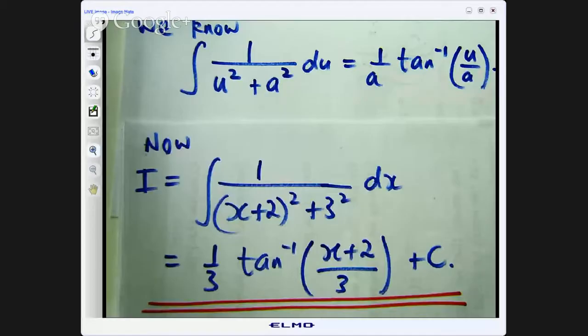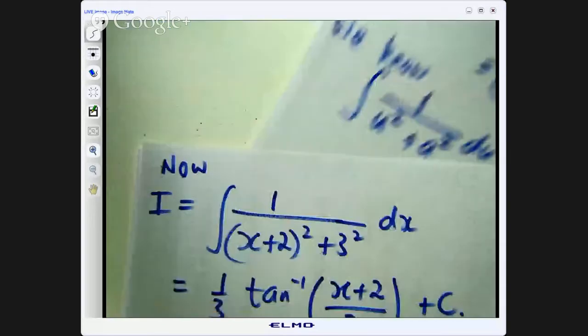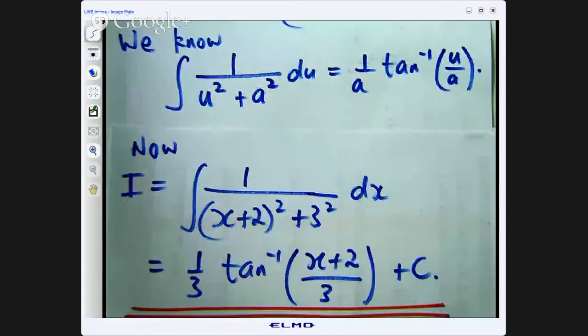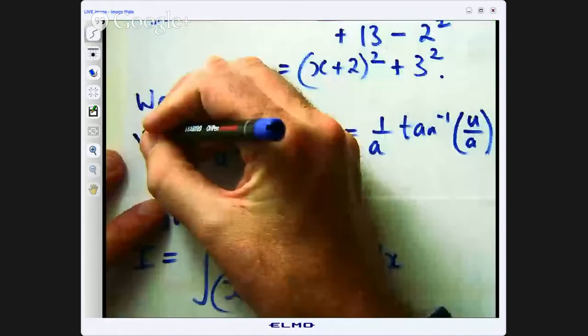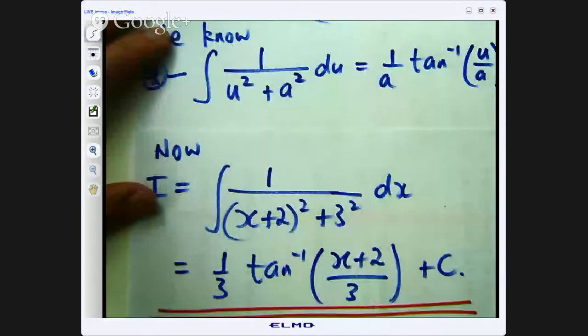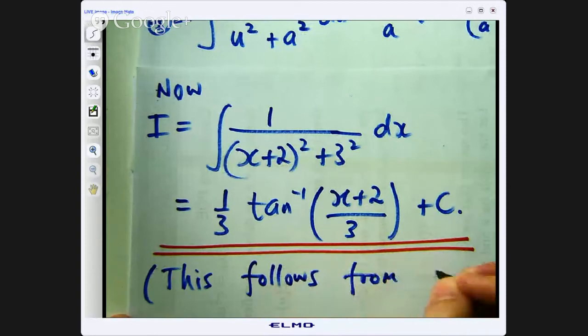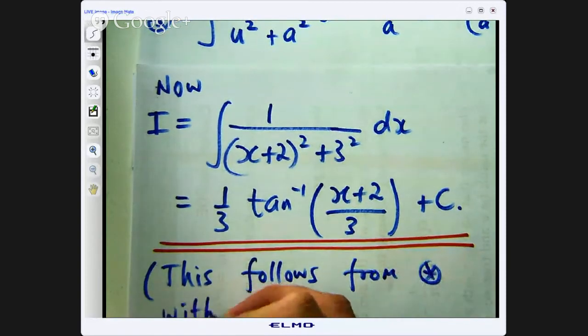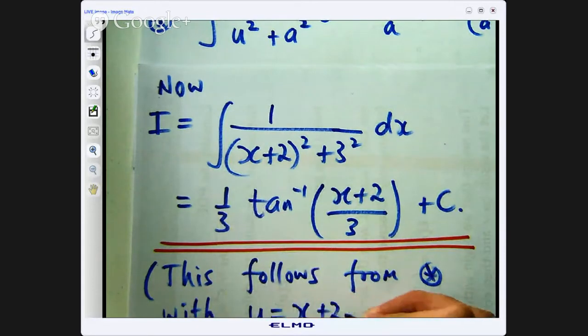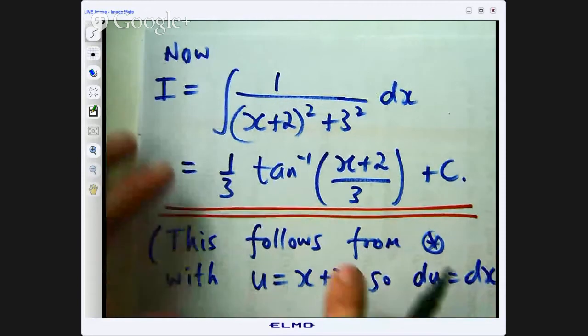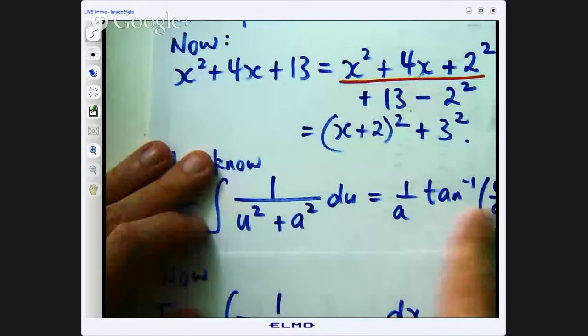Now some of you are probably thinking hang on you jumped a few steps there. Let me go through and fill in those steps. Let me just justify the step from here to here. So let us call this say star. So this line follows from star with the substitution u equals x plus 2. So du equals dx. So you sub those in there. You get 1 on u squared plus 3 squared du. And we know that that is that with a equals 3.